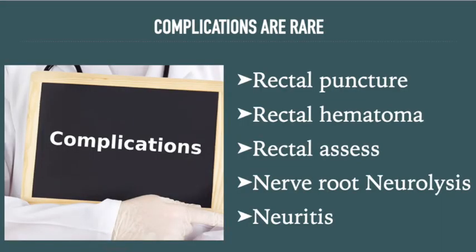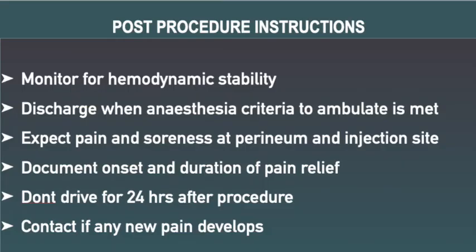The Ganglion Impar block is a very safe procedure and complications are rare. Like any other interventional pain procedure, we have to monitor the patient for hemodynamic stability and discharge the patient when the anesthesia criteria to ambulate is met. Patient should apply cold compresses if there is pain and soreness at the perineum and injection site and should document the onset and duration of pain relief.